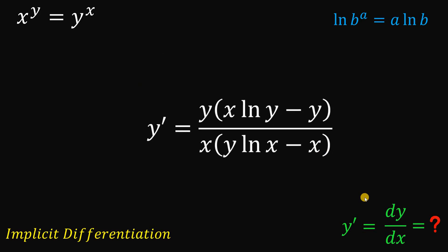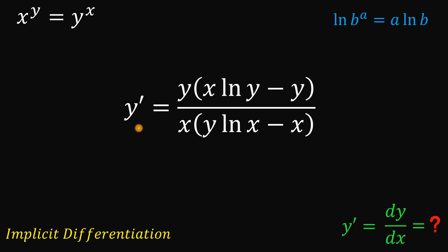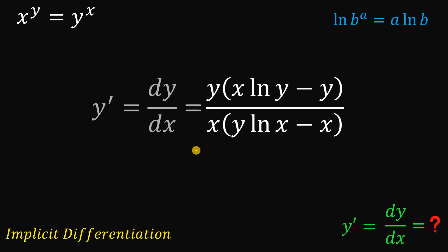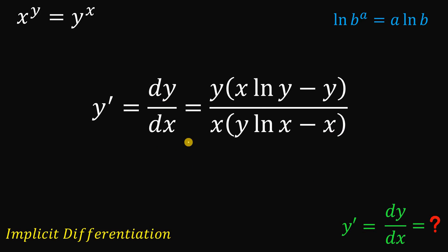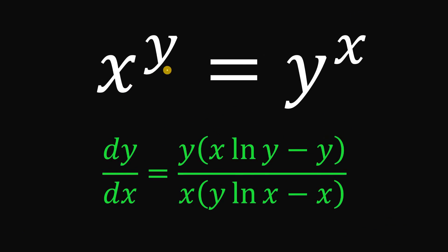This gives us y prime as y multiplied by (x times ln y minus y) all over x, multiplied by (y times ln x minus x). And this is our answer, because y prime is also the same thing as dy/dx, the derivative of y with respect to x. Therefore, given x raised to the power of y equals y raised to the power of x, the derivative of y with respect to x is y times (x ln y minus y) all over x times (y ln x minus x).